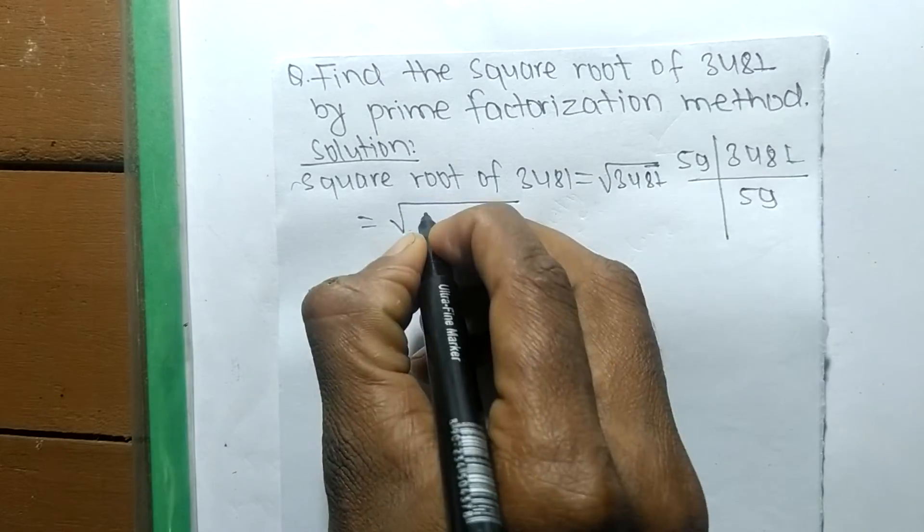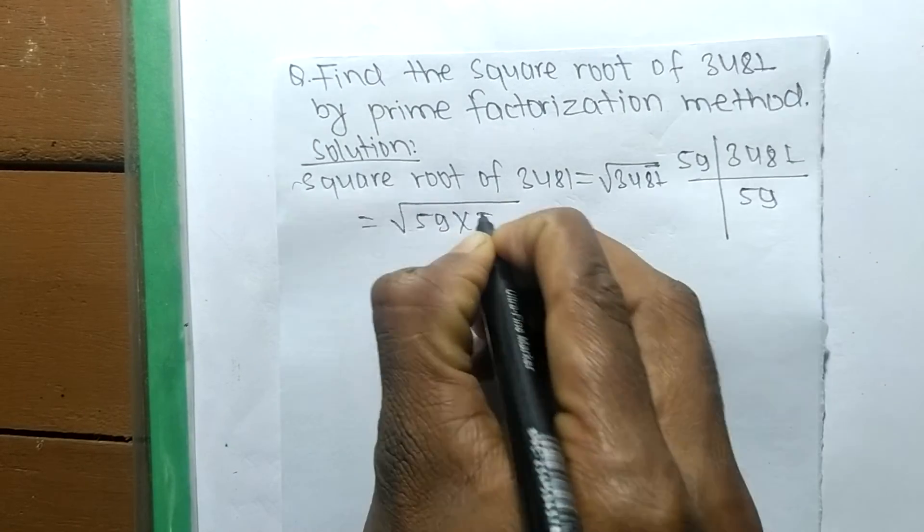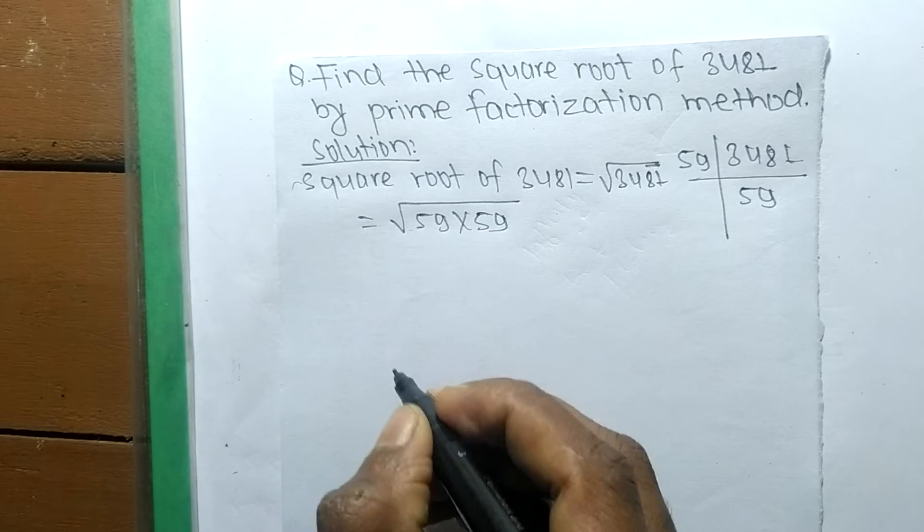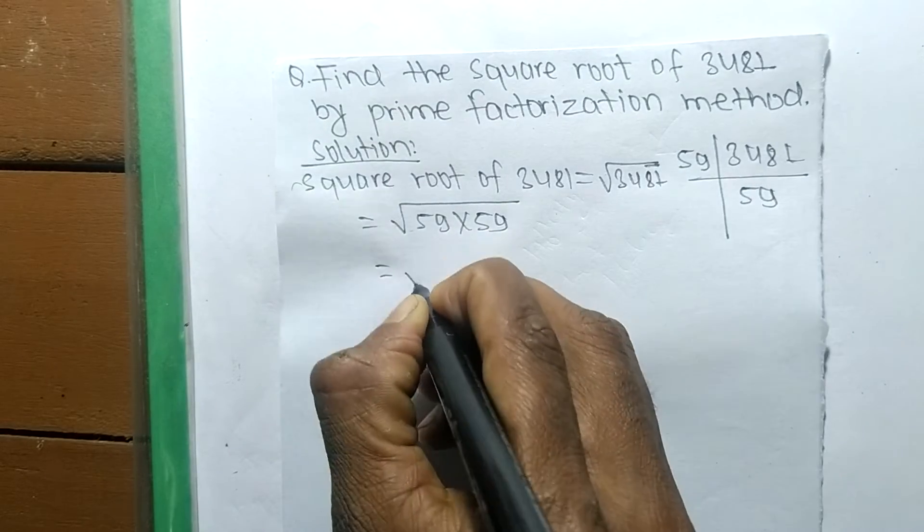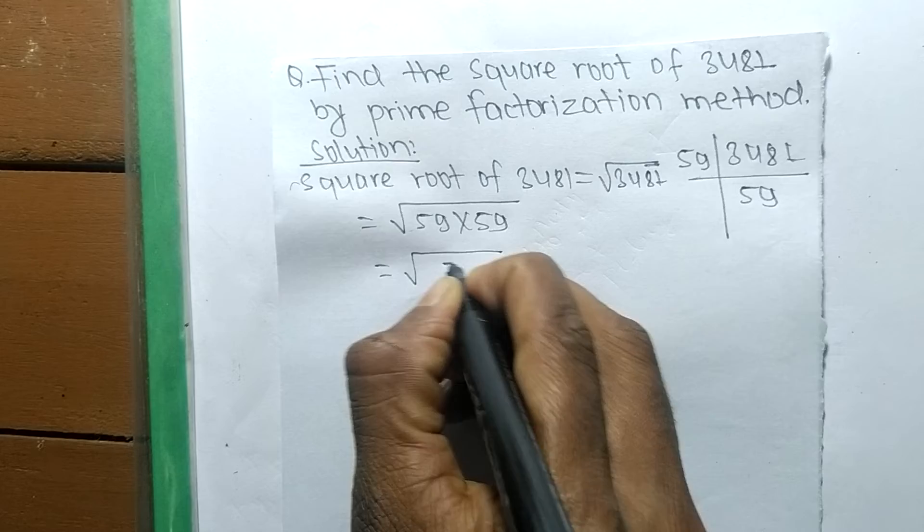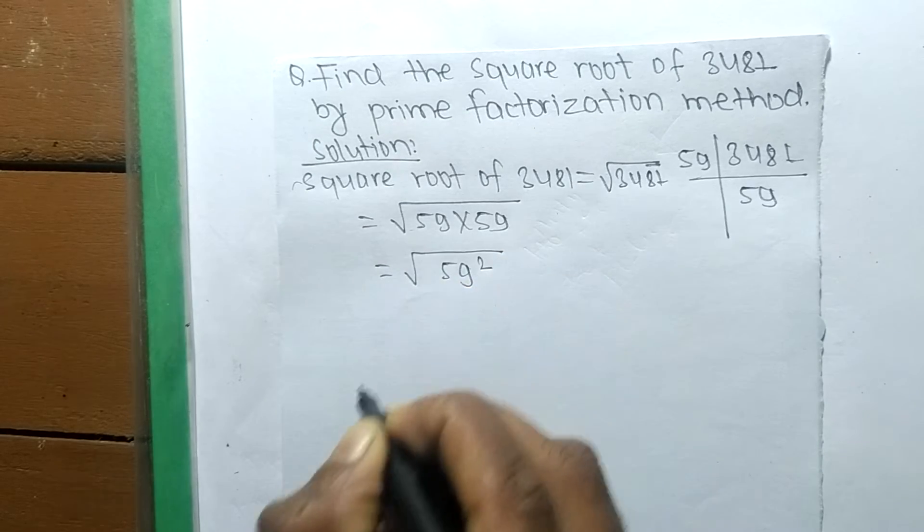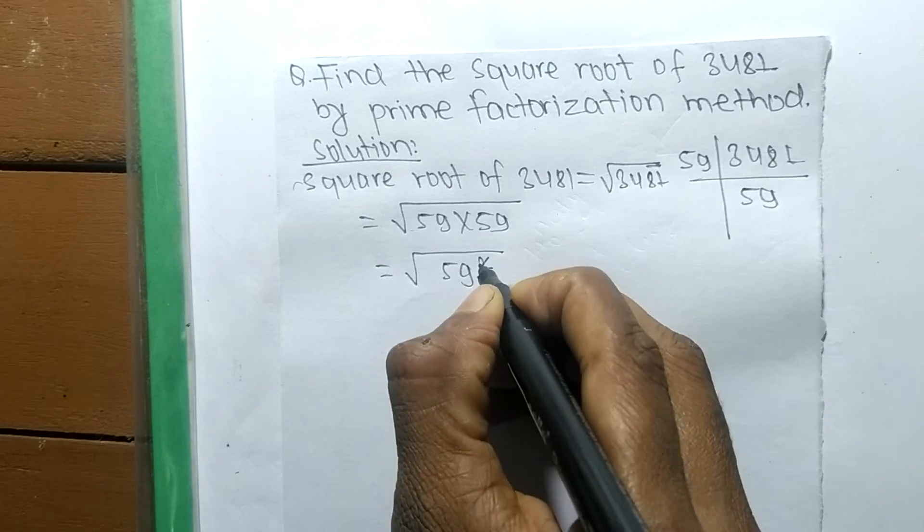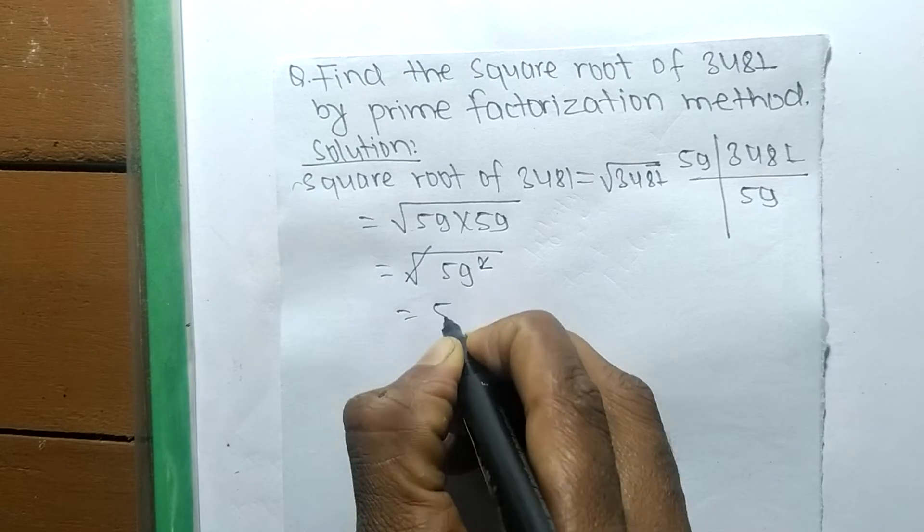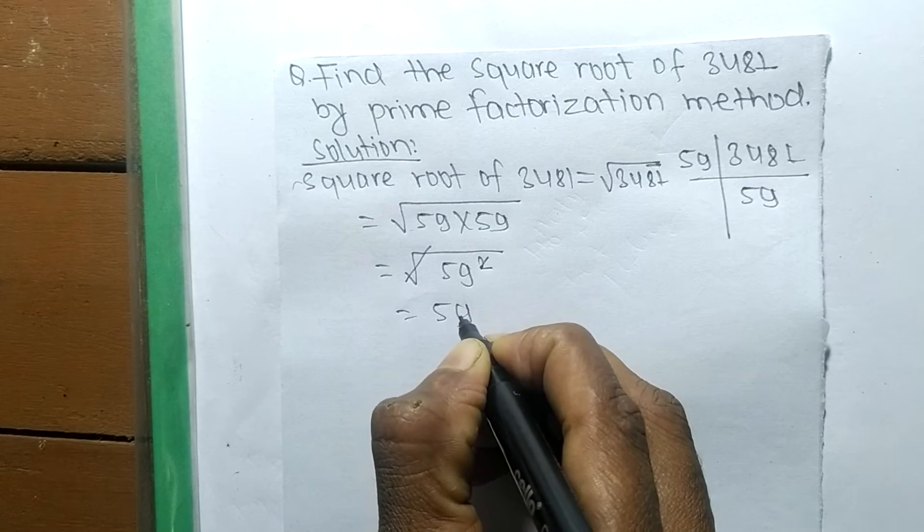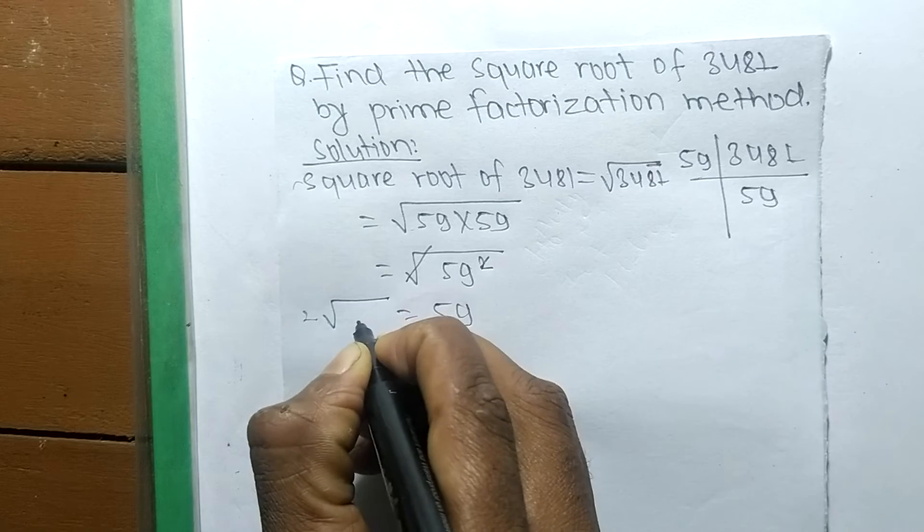Now we make the square of the prime numbers, so it is 59 squared. A square and a square root cancel each other, so 59 is the remaining. Therefore, the square root of 3481 is 59.